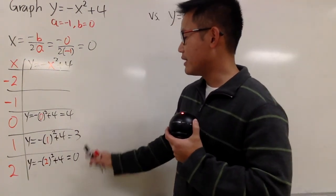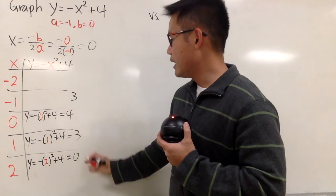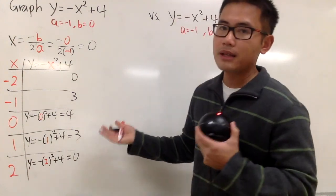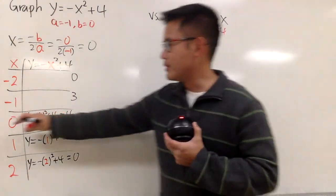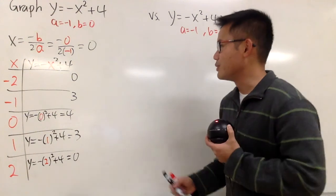And in fact, once you have this done, you know this value is going to be 3 and 0 because parabolas are symmetrical, right? If you put the vertex right in the middle. So this is pretty much it.